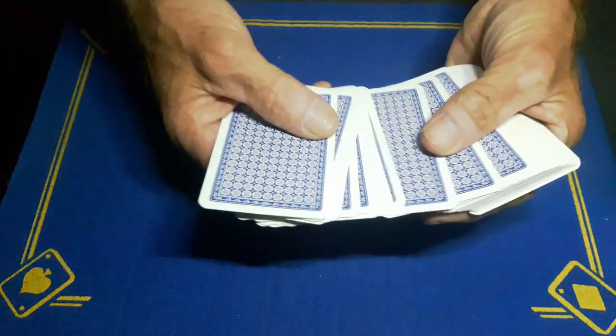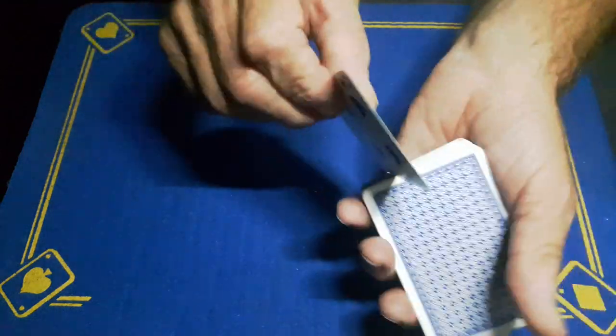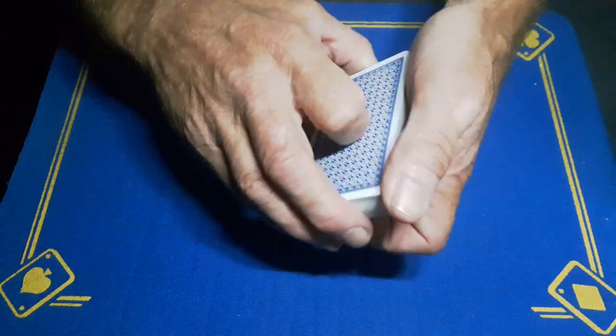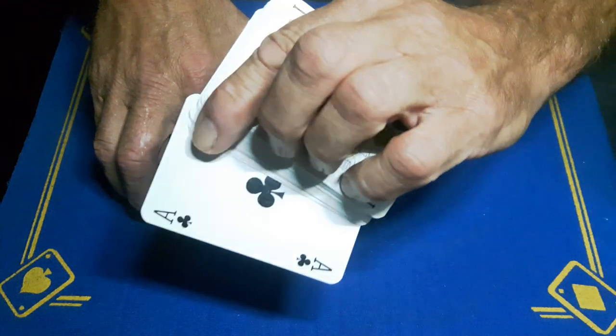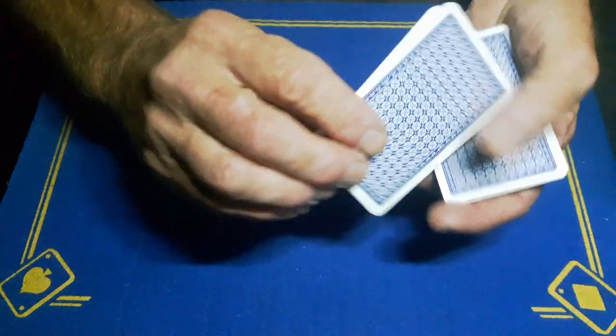So what you're basically going to do: spectator's got a free choice to pick any card, the six of spades in performance. What did I do? In fact I think I riffled down the side, call out stop, show the spectator their card, the ace of clubs.